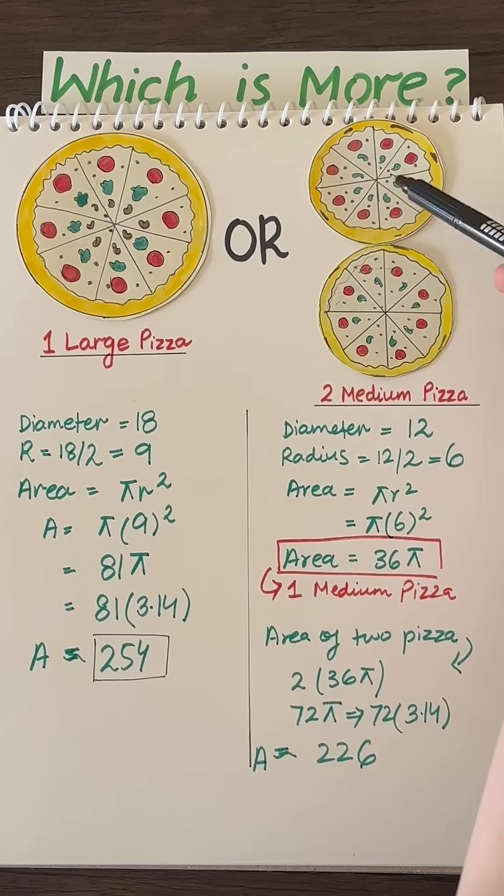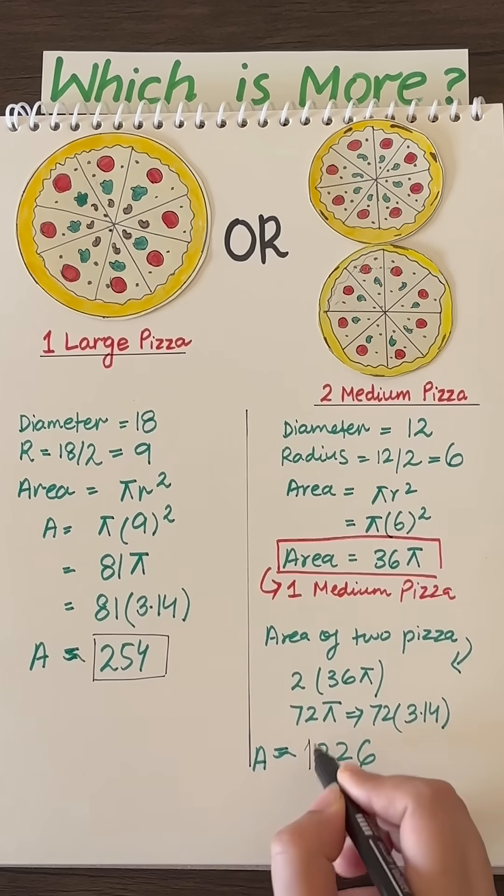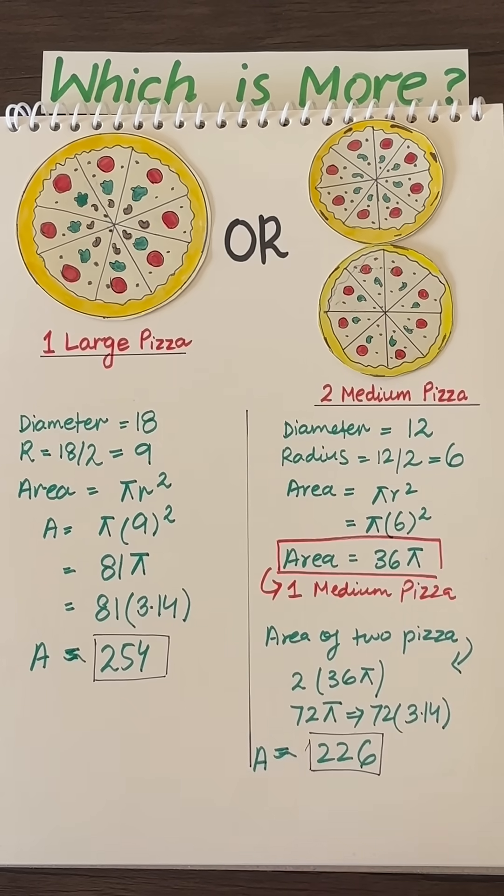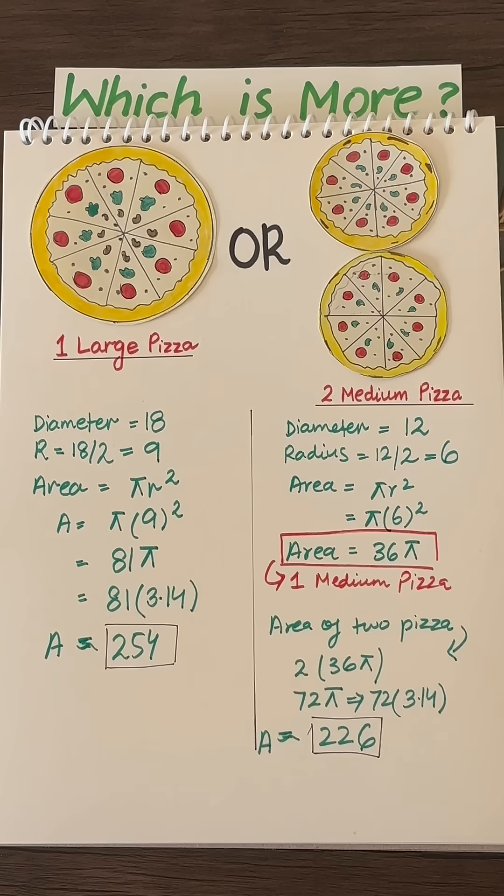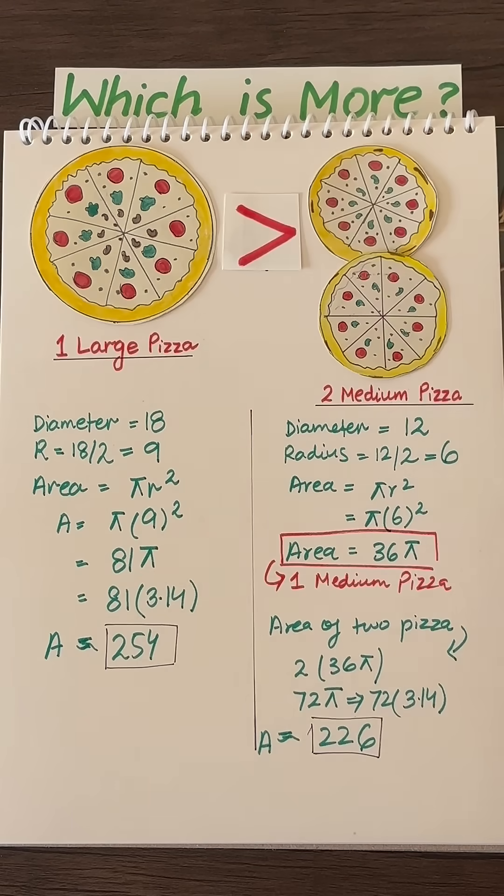That means two medium-sized pizzas have an area of 226, which is clearly much less than the area of one large pizza. So it is concluded that one large pizza has more pizza than two medium pizzas. Now which one will you prefer? One large or two mediums?